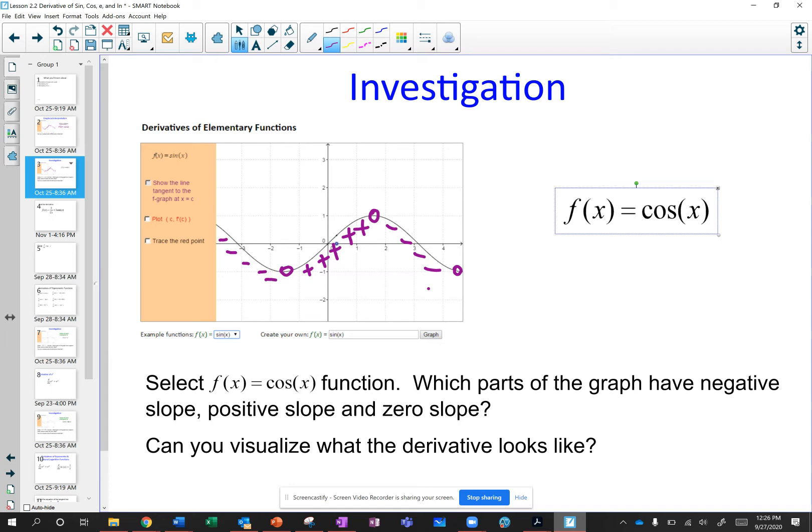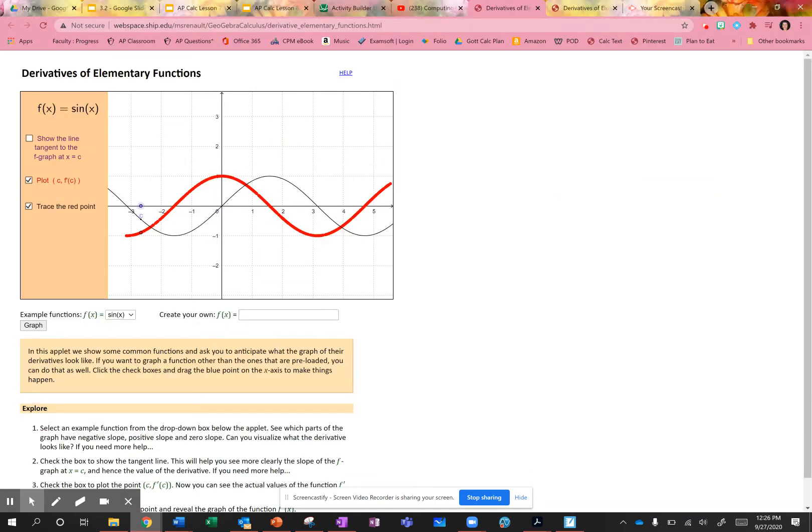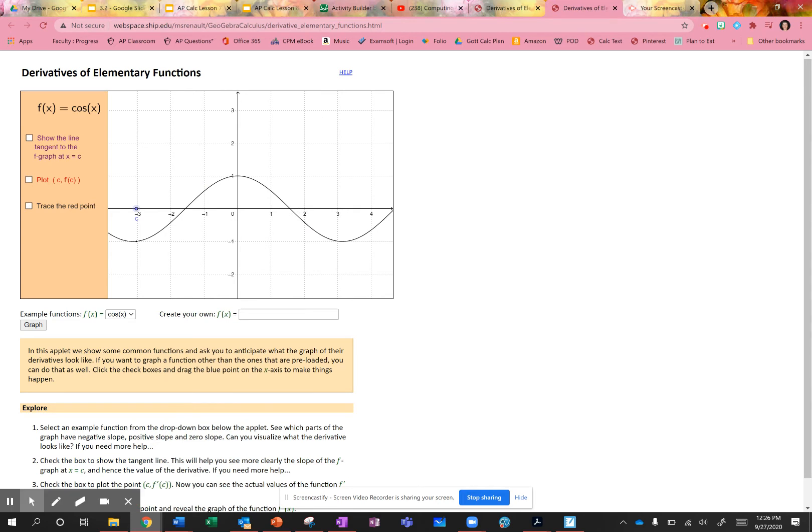Let's see on our little app what that might look like. So here I'm given the graph of cosine. And if I were to calculate these slopes, you see the slopes are positive, now 0, negative, now 0.